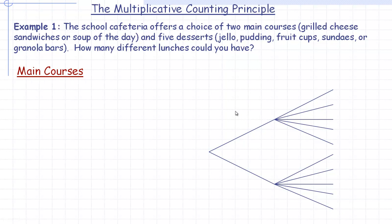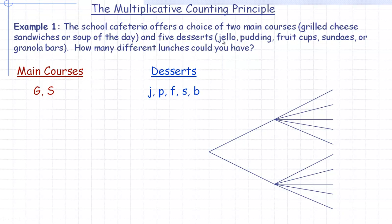First, the organized listing method. The school cafeteria offers two main courses and five desserts. We'll use a capital G for grilled cheese sandwiches and capital S for soup of the day. For desserts, we use lowercase letters: j for jello, p for pudding, f for fruit cup, little s for sundae, and b for granola bar — I used b for bar since I already used capital G.